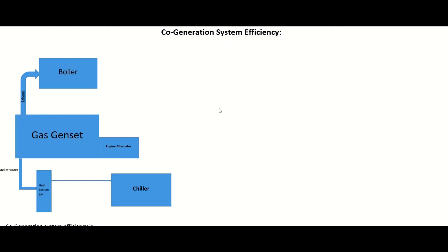For those who have not watched my previous video, let's talk about the cogeneration system. A cogeneration system is a system in which a gas generator, boiler, and chiller work together. When the gas generator runs, its exhaust drives a waste heat recovery boiler, and from its jacket water we run a hot water absorption chiller.